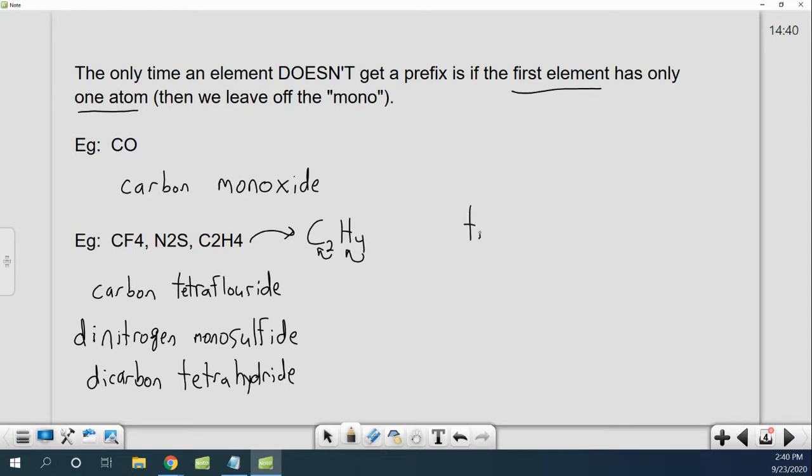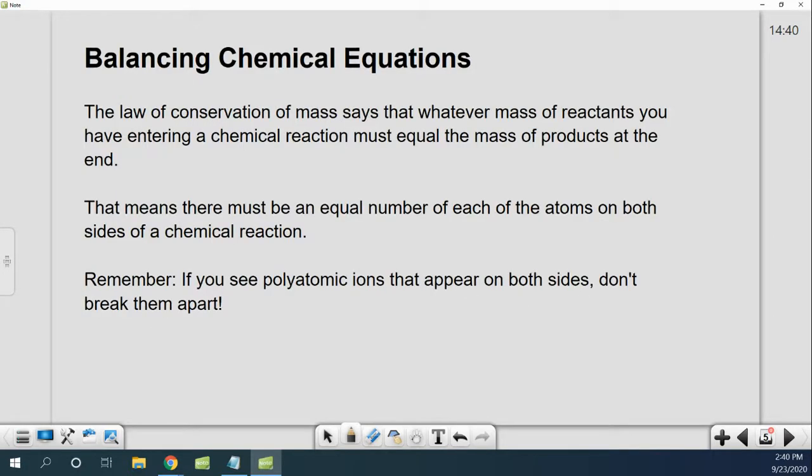We have named some covalent compounds. And going backwards from name to element is just as easy. Like if I had trinitrogen hexachloride, what do I got? Nitrogen with three of them. Chlorine hexa with six of them. I've changed my name back into my chemical formula. Super easy. So that kind of wraps up our review of naming covalent compounds.